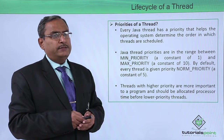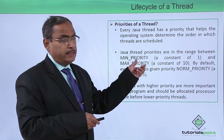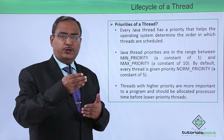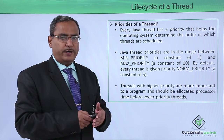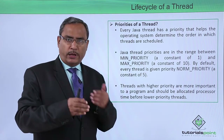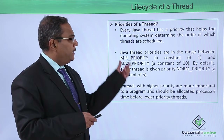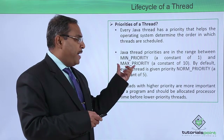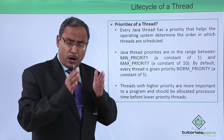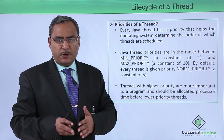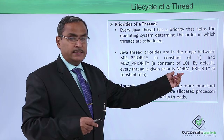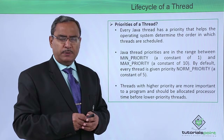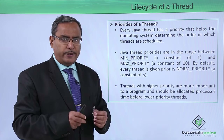Now we are discussing priorities of a thread. Every Java thread has a priority that helps the operating system determine the order in which threads are scheduled — higher priority threads execute first compared to lower priority threads. Java thread priorities range between MIN_PRIORITY (a constant of 1) and MAX_PRIORITY (a constant of 10). By default, every thread is given NORM_PRIORITY, which is a constant of 5.